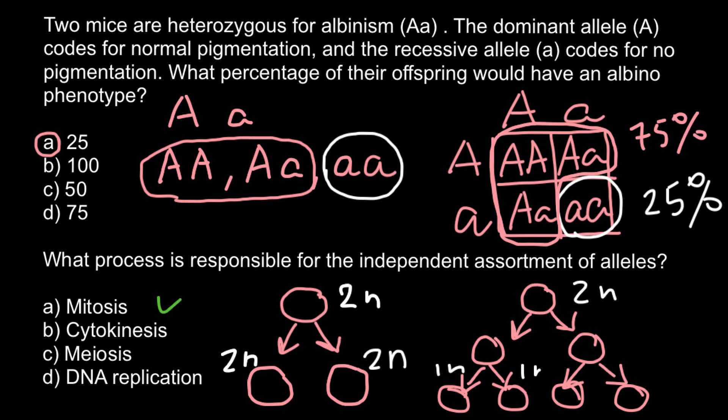Once again, we start with a diploid cell here and end up with 1n or haploid gametes here. Gametes can be sperm or egg cells, depending on the sex of the individual. If we compare with mitosis, in mitosis one mother cell produces two daughter cells identical to the mother cell.